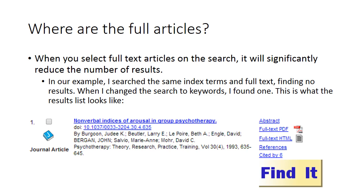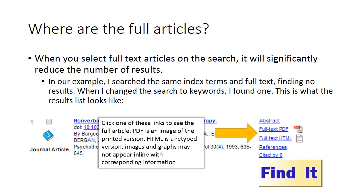So where are the full text articles? If you remember at the beginning, I did not select full text. So when you are searching and you need it right now, you can select that full text option. This is the type of result that you will see in your list. Over here is where you can click to find the full article. If you click on the PDF, it's an image of the article as it appeared in the original print. If you click on full text HTML, it's a reprint of the article — for example, any images or graphs may not appear in the text as they were in the original print.